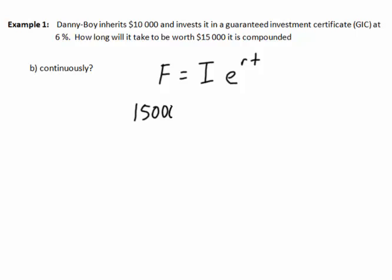We just put our final amounts in. We have 15,000. Our initial amount was 10,000. We're going to keep our base e, the rate in this case we can just put it in as our decimal to the t.